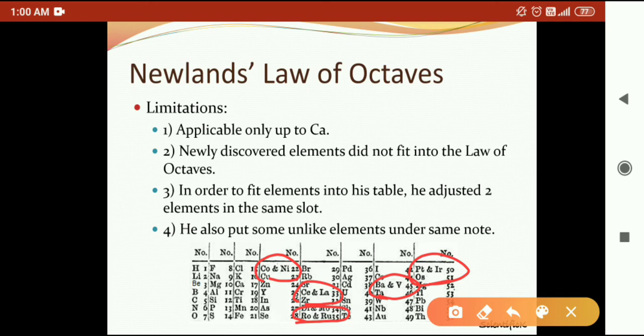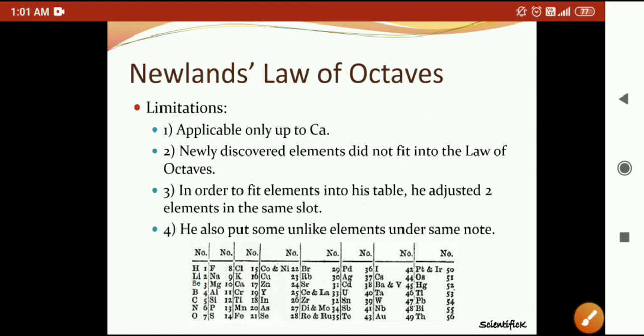The fourth limitation is that he placed some unlike elements in the same note. What does same note mean? First and eighth element should be the same. When we read horizontally - like fluorine, chlorine, cobalt and nickel, and bromine - they should have the same properties. But cobalt and nickel do not have the same properties as fluorine, chlorine and bromine. They are unlike elements. So this is another limitation of Newlands' Law of Octaves.